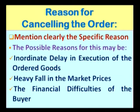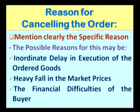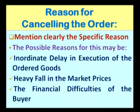Because of a heavy fall in market prices you may also cancel the order. For example, a businessman who ordered 500 tins of double-filter groundnut oil at 1800 rupees per tin, if the price falls by 200 or 300 rupees per tin, it will be a heavy loss for him. Similarly, if there are financial difficulties or financial bankruptcy and the customer is unable to make payment or settle accounts, he may also cancel the order. Whatever the reason, please mention it clearly.